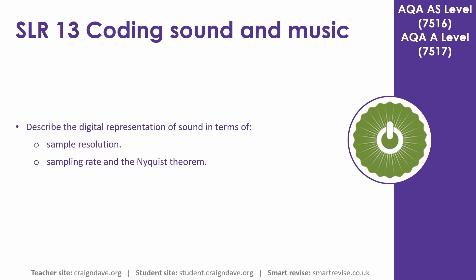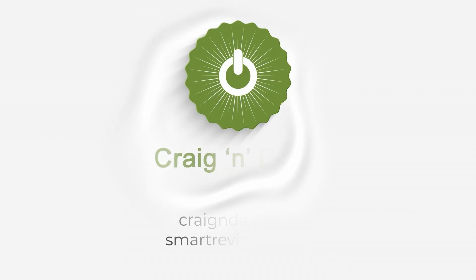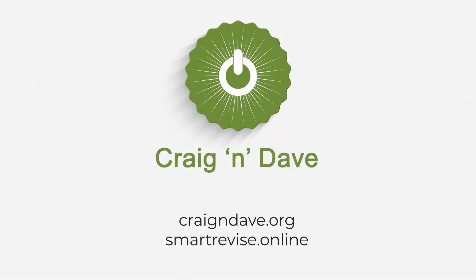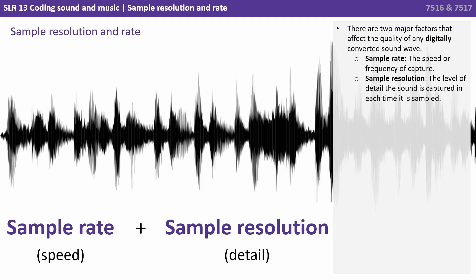In this video we're going to describe the digital representation of sound in terms of sampling resolution and also talk about sampling rate and the Nyquist theorem. There are two major factors that affect the quality of any digitally converted sound wave: the sample rate, which is the speed or frequency of capture, and the sample resolution, which is the level of detail the sound is captured in each time it is sampled.